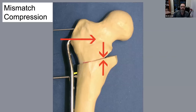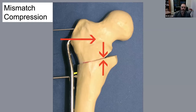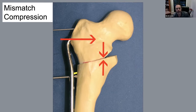He brought up mismatched compression. With angled blade plates, you can create a space in the distal segment. As you place that first screw, you anchor the plate distally, then tighten the screw nearest the osteotomy — this both drives the blade into the proximal segment and pulls the bone towards the plate, really compressing the osteotomy. This is for higher-angle blade plates — anything over 100 degrees — where you theoretically shouldn't be using the articulated tensioning device.